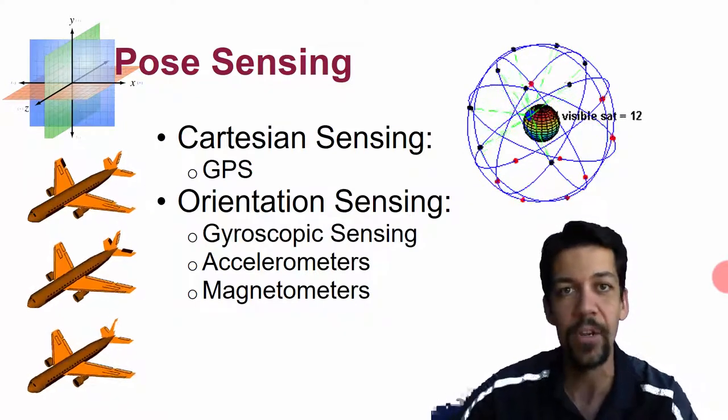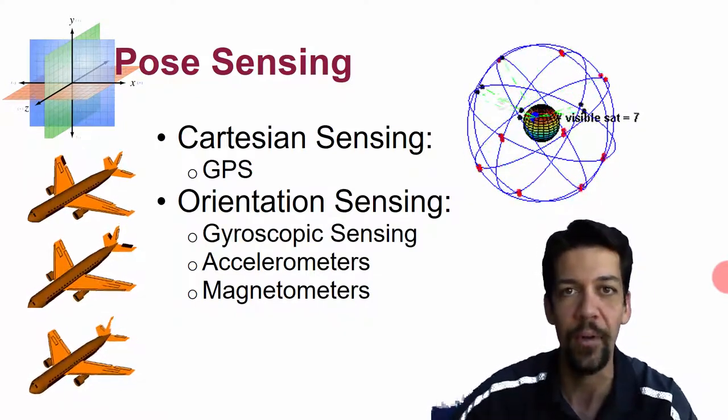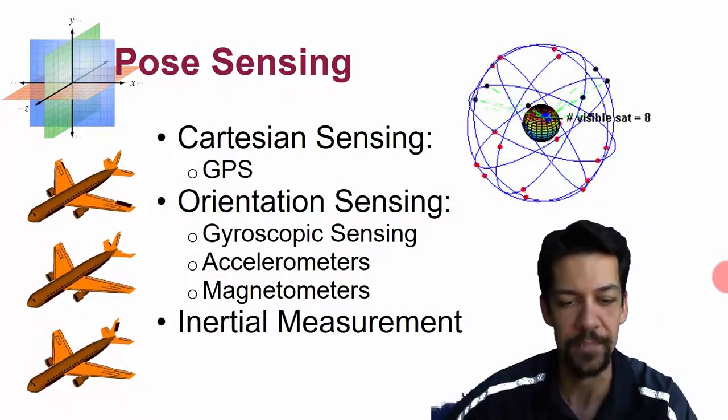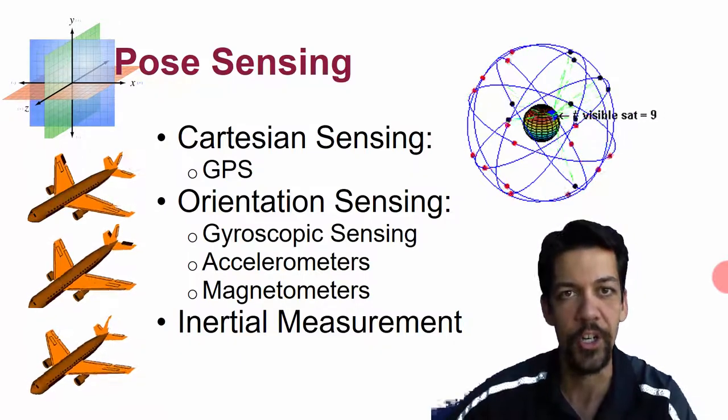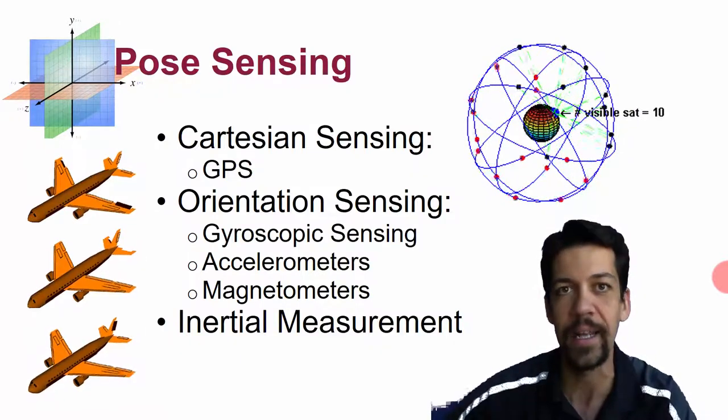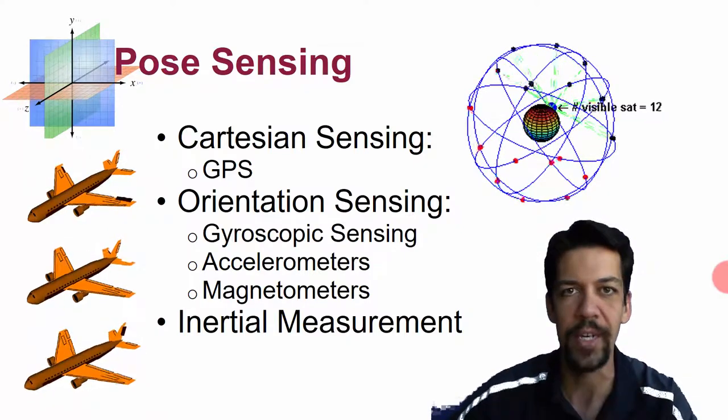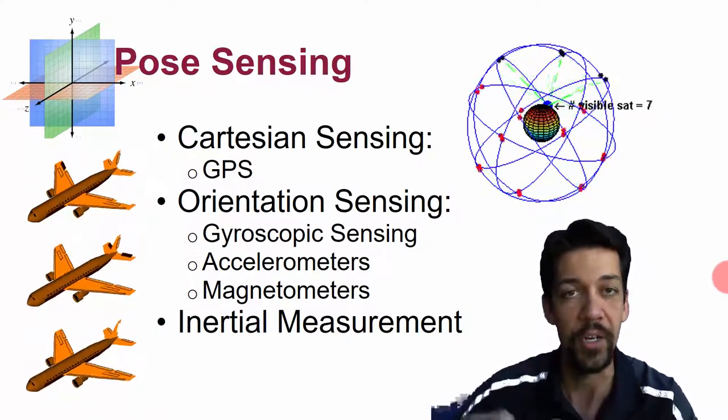We know where north is, we can basically use a compass, and using these three things, we can figure out how the object is positioned in three-dimensional space. All of these things are called inertial measurement. The idea is that we're measuring things with reference to the inertial reference frame.